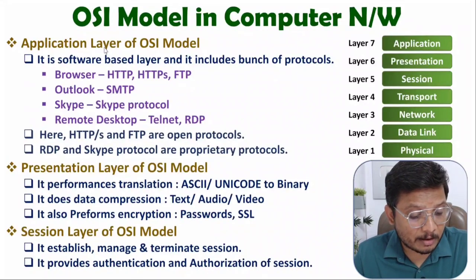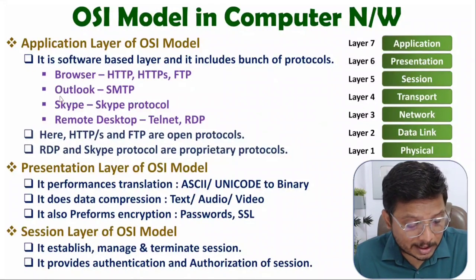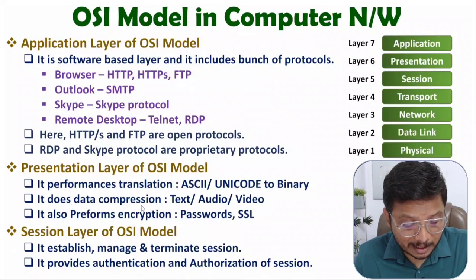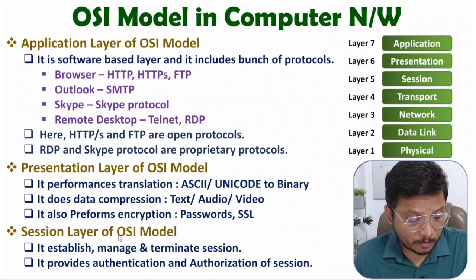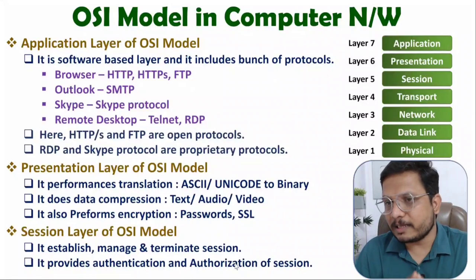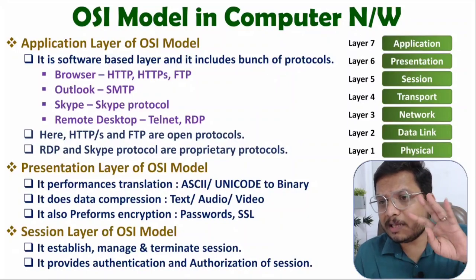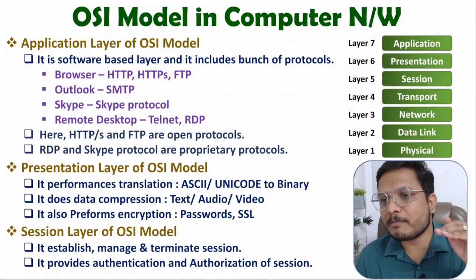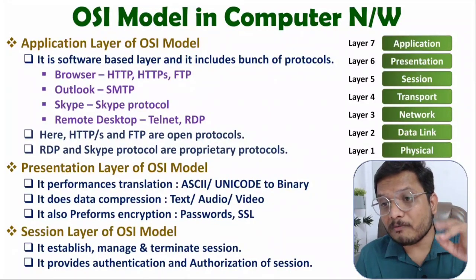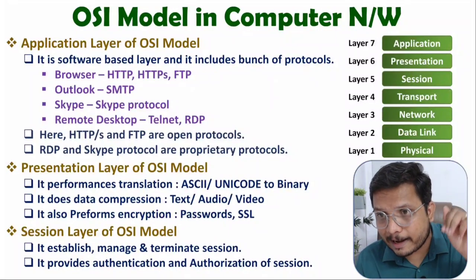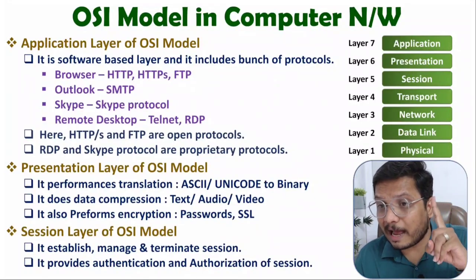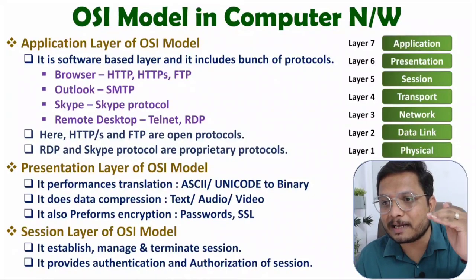So in total we have three upper layers: application, presentation, and session. Application layer works at software level. Presentation layer converts characters to binary, performs data compression, and performs encryption. Session layer handles establishment, management, and termination of sessions with authentication and authorization. In a practical scenario, most web browsers handle all three of these layers within a single application.